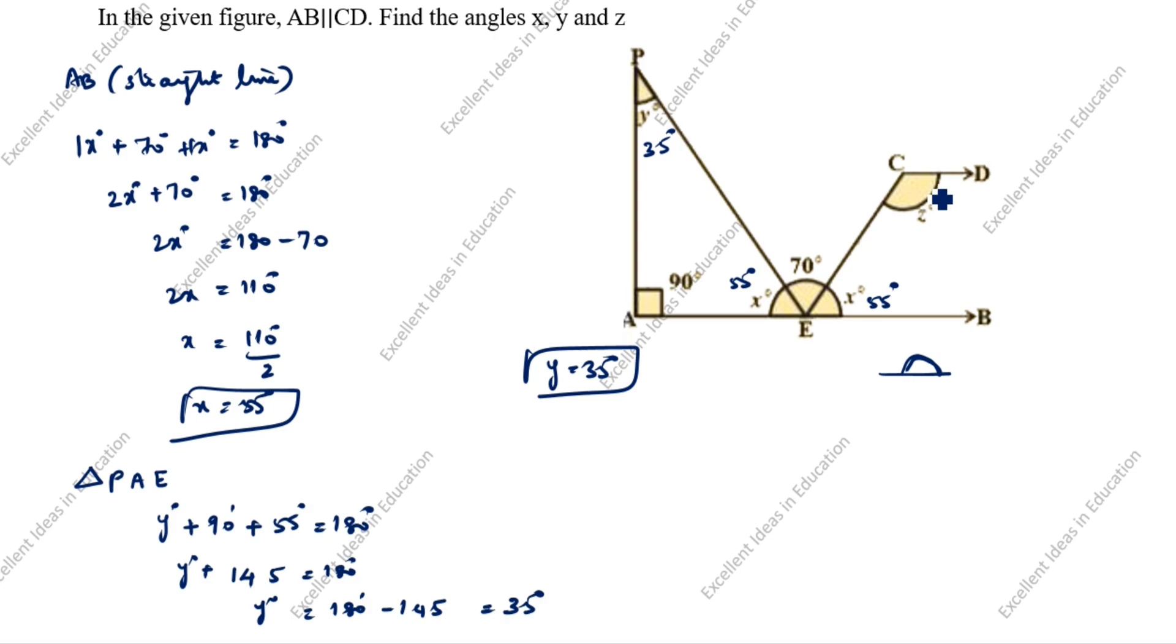Next, we will find this z degree. Angle DCE equals angle AEC. This angle AEC is 55 degrees plus 70 degrees, or x degrees plus 70 degrees. So z degrees is equal to 55 plus 70, which is 125 degrees.